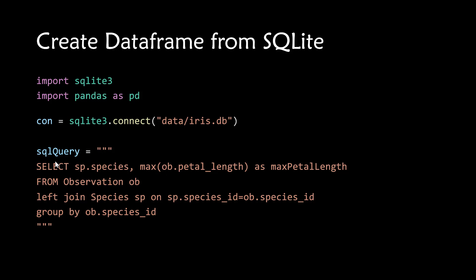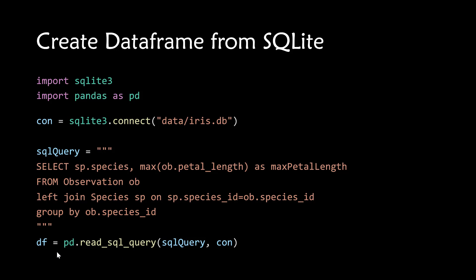So you create a database connection and you have an SQL query. This SQL query gets some columns — species and max petal length — by joining two tables. It's a query returning a table of data with two columns: species and max petal length. To get this result into a DataFrame, just use the `read_sql_query` function of pandas: write `pd.read_sql_query()`, with the first argument being the SQL query and the second argument being the SQLite connection. You should get the tabular SQL result as a DataFrame.